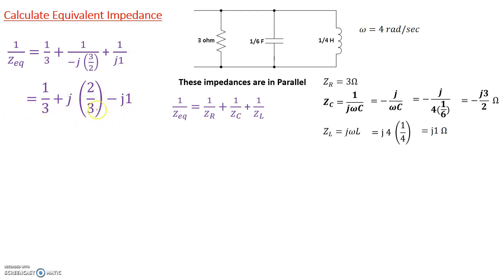Now I can add the real terms, which is just 1/3, and the imaginary terms, which is minus 1 plus 2/3, leaving us with negative 1/3. So 1/3 is the real part and the imaginary part is also 1/3, so minus j 1/3. That's 1 over Z_eq. We want the equivalent impedance, so we can write this as (1 minus j) divided by 3.